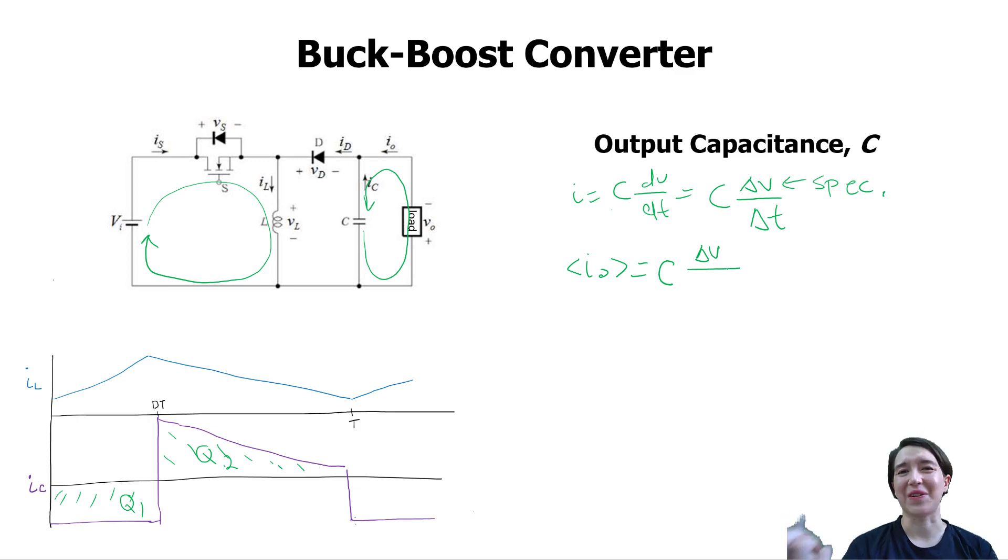Delta t is going to be d times T because we're on during that time from 0 to dt. So those are our basic values, and now we need to figure out the capacitance value, so we just rewrite that equation.